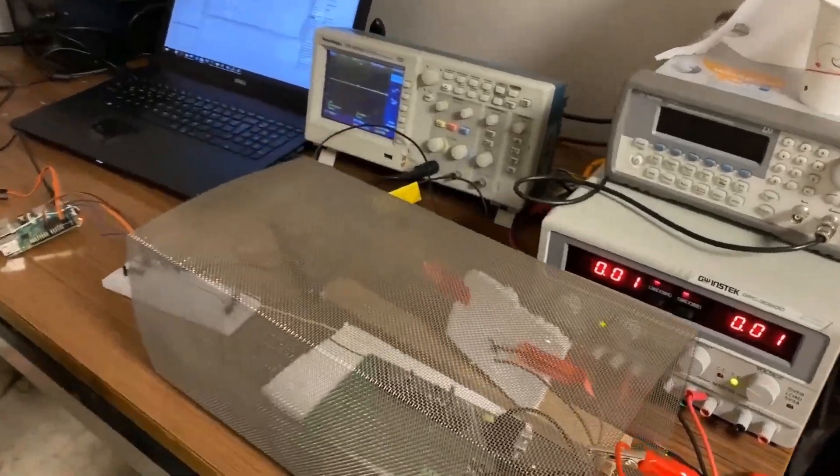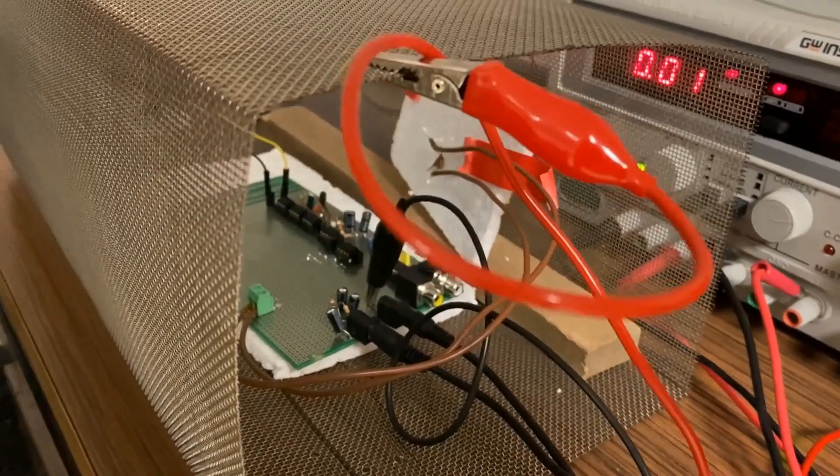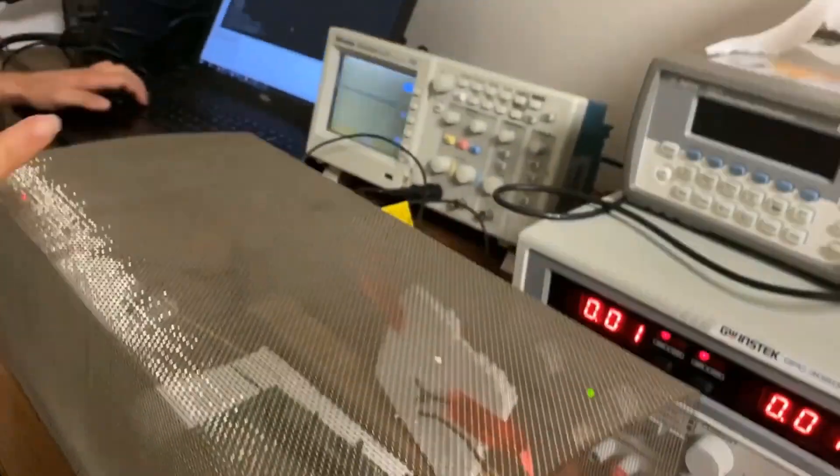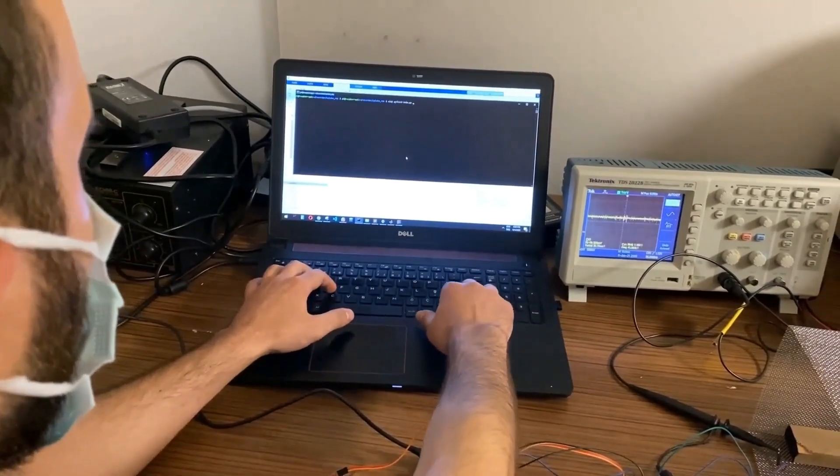As you can see now, the experimental setup is here. We are using both oscilloscope and the computer to display neural activity. And we are using a Faraday cage in order to avoid noise which comes from the devices and our body.